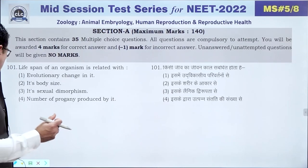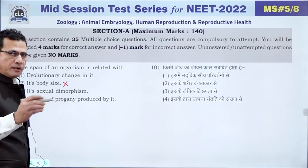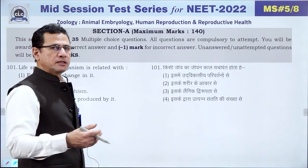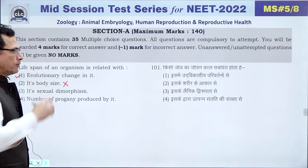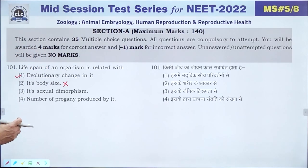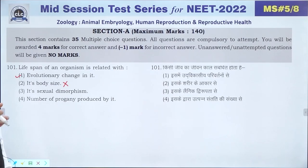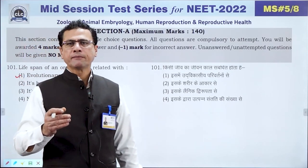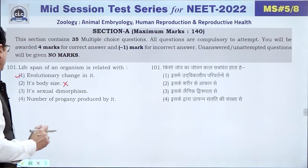Life span is not related to body size, sexual dimorphism, or number of progeny. It is related to evolutionary changes. In any organism, the life span primarily decides the evolution. If the life span is short, evolution occurs early; if life span is longer, evolution is slower. The answer is 1.